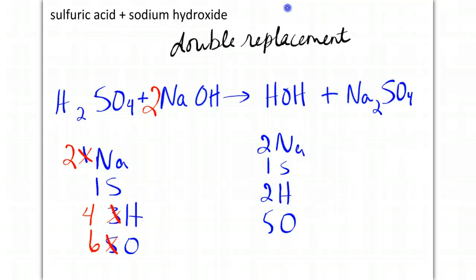Notice that the sulfurs are equal already, so now we can do the hydrogens. 4 on the left, 2 on the right, so if I put a 2 here, that gives me 4 hydrogens, but it also changes my oxygen, and now I have 6. And so sodium, sulfur, hydrogen, and oxygen are now all balanced with each other. We have a mole-to-mole ratio of 1 to 2 to 2 to 1.